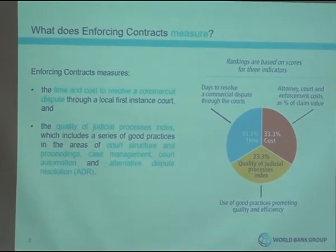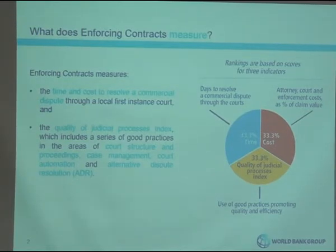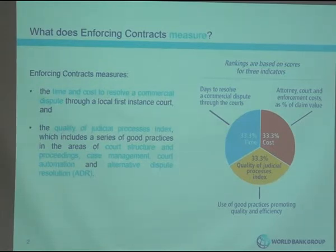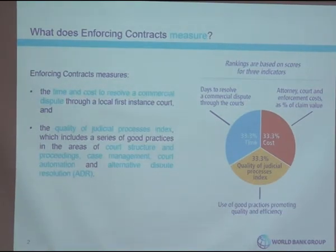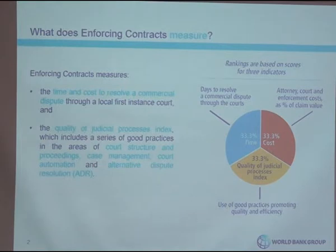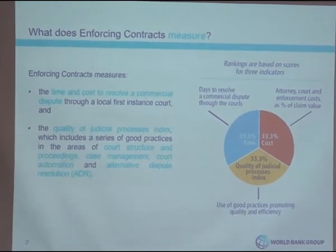What does the enforcing contract indicator measure? The indicator is divided in total into three equally valued indices. We measure the time and cost to resolve a commercial dispute through a local first instance court. About 33.3% of the final score is for the time needed to resolve the dispute, and 33.3% for the cost, which is calculated as a percentage of the claim value. Time is calculated in days, unlike the resolving insolvency indicator which uses years.